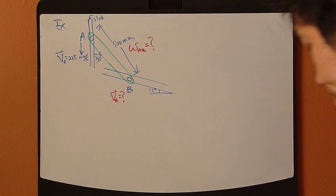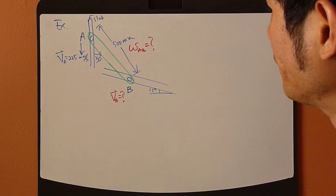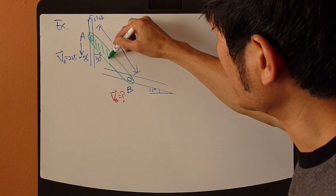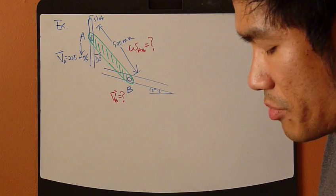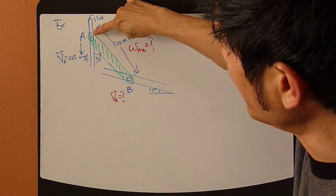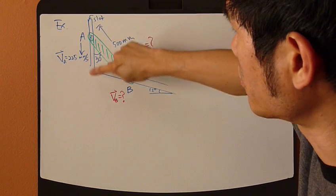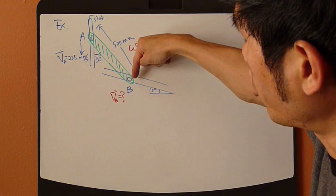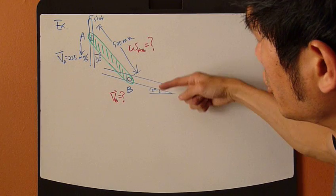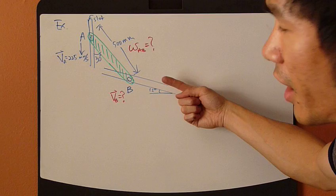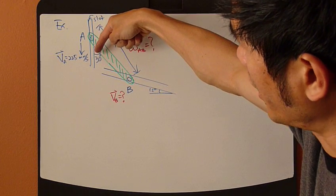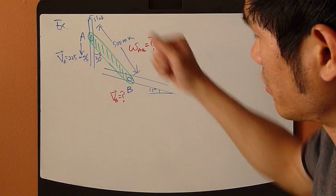Okay, let's look at an example. We have a rigid body, a link like this, that's moving along two slots. This end, which is point A, is moving along a vertical slot. The other end, point B, is along this second slot right here, which is at a 15 degree angle. At this position, this rigid body makes a 30 degree angle with the vertical slot.